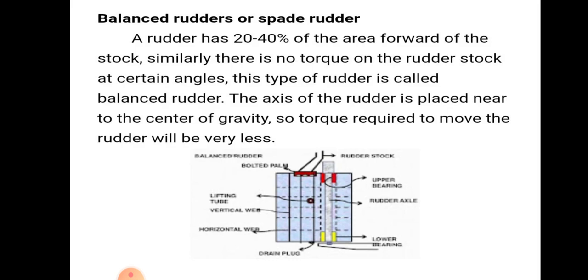Balanced rudder or spade rudder: a balanced rudder has 20 to 40 percent of its area forward of the stock. There is no torque on the rudder stock at a certain angle. The axis of the rudder is placed near the centre of gravity, so the torque required to move the rudder will be very less.